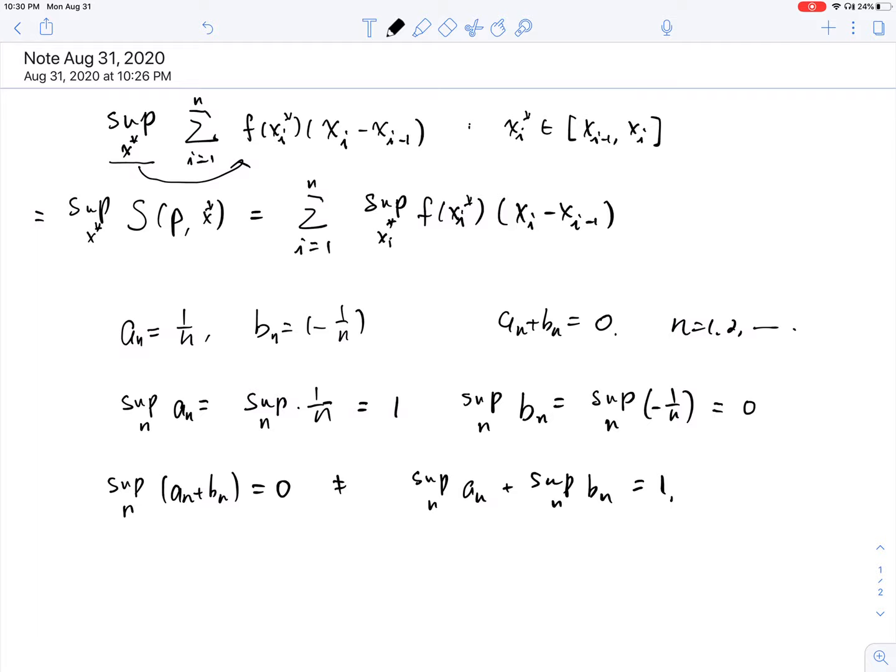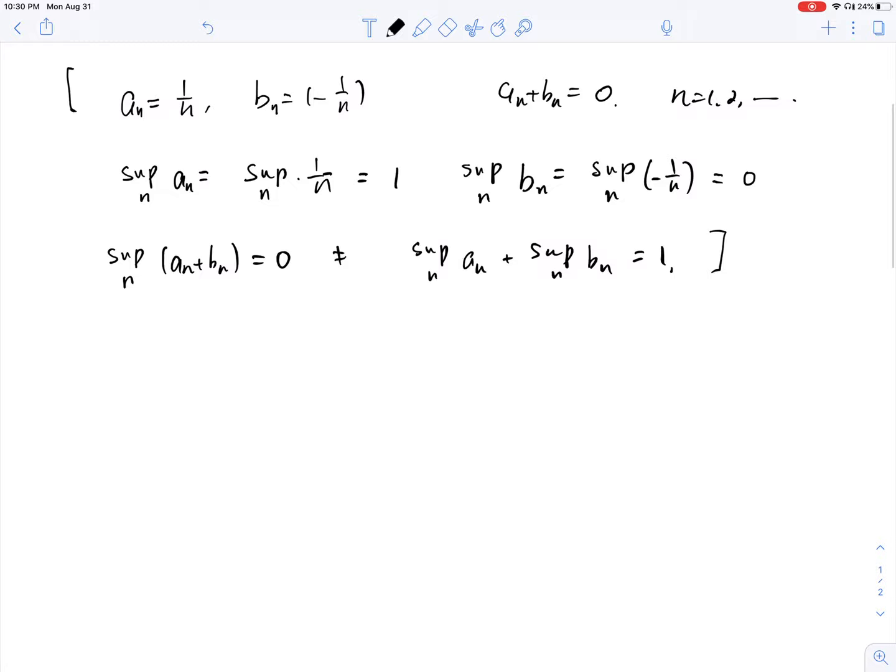Now the reason that we can do this over here is because these xi stars, they are actually independent. So what we are using over here is the following fact.